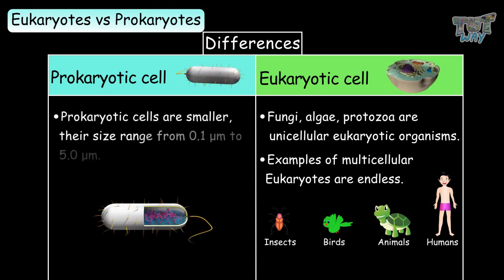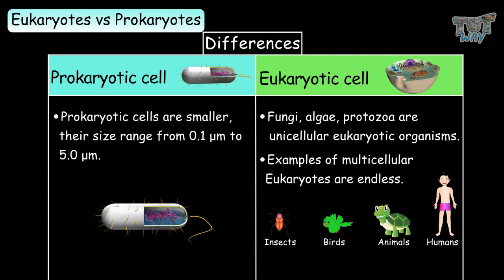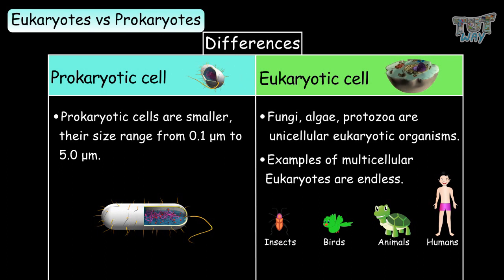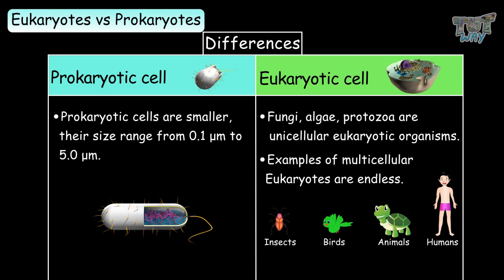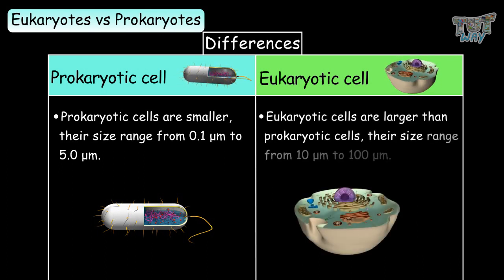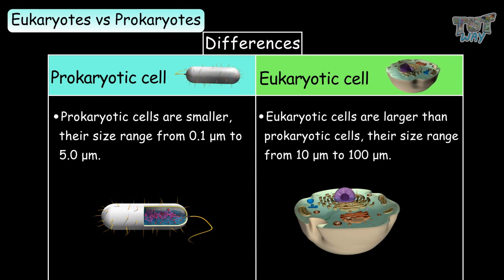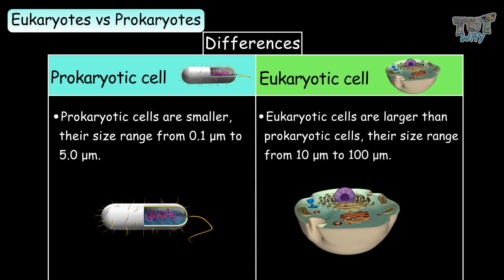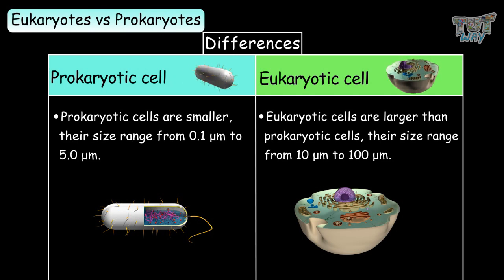Prokaryotic cells are smaller, with sizes ranging from 0.1 to 5 micrometers in diameter. Eukaryotic cells are larger, ranging from 10 to 100 micrometers in diameter.